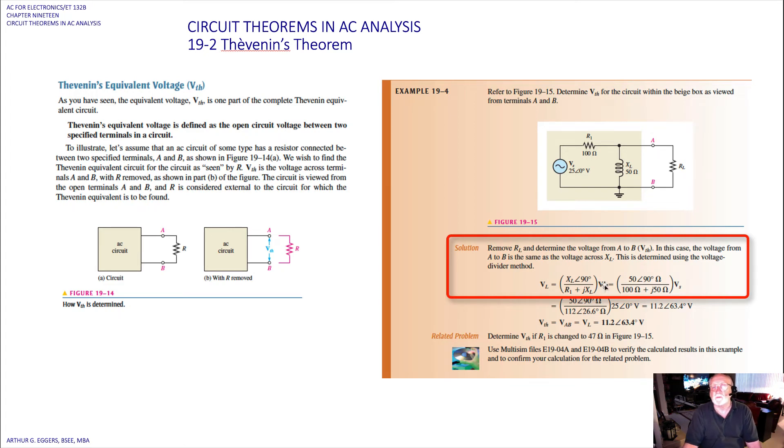When we do this, of course you can see that we've got a polar form in the numerator, a rectangular form in the denominator. So what we need to do is convert that 100 ohms plus j50 to polar. When we do that, we get 112∠26.6° ohms. Now we can use the quotient relationship: 112 into 50 and then 26.6° from 90°. When we subtract it in the denominator from the numerator and we multiply that by 25∠0° for the voltage source, we get 11.2∠63.4° voltage.